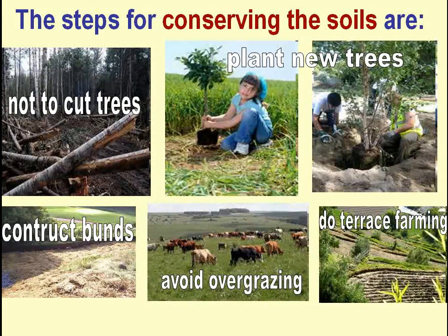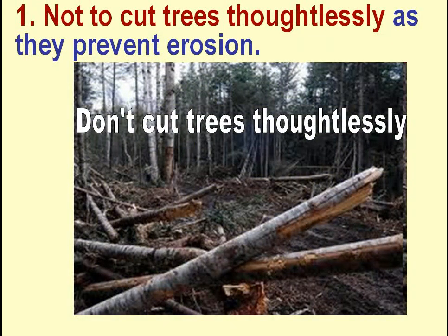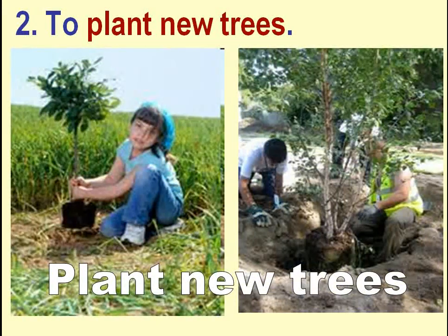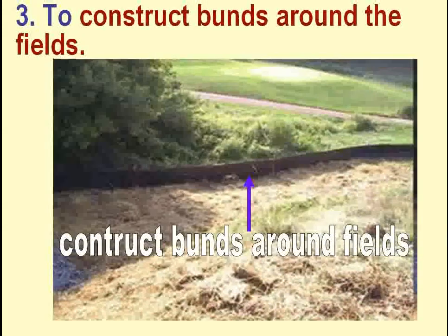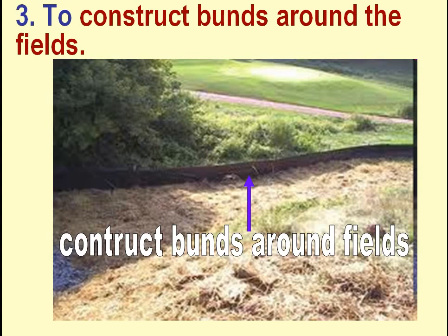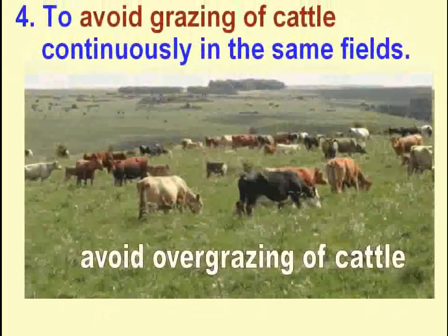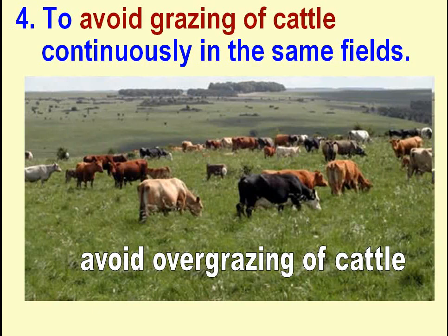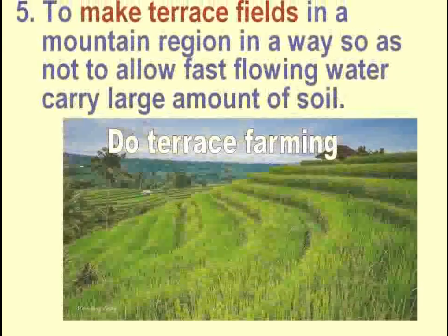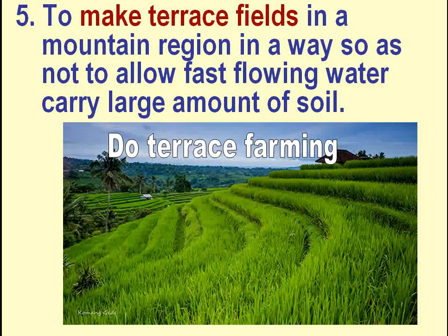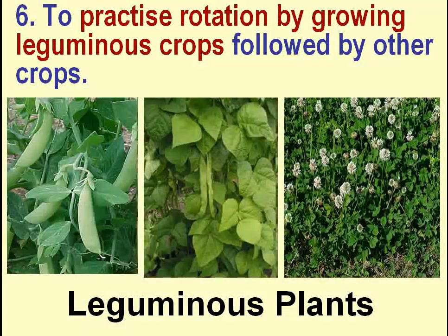The steps for conserving the soil are: not to cut trees thoughtlessly as they prevent erosion; to plant new trees; to construct bunds around the fields; to avoid continuous grazing of cattle in the same fields; to make terrace fields in mountain regions so as not to allow fast-flowing water to carry large amounts of soil; and to practice crop rotation by growing leguminous crops followed by other crops.